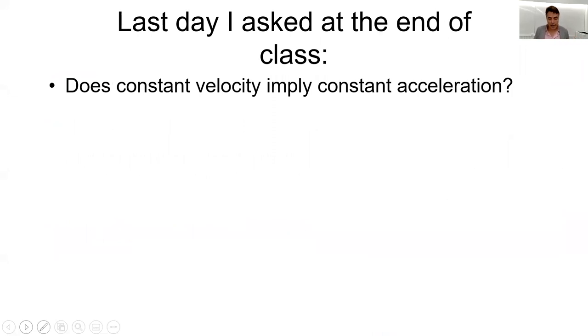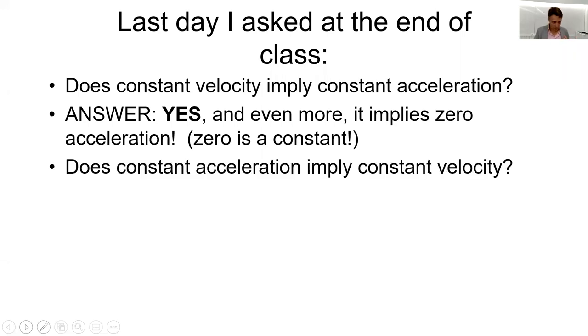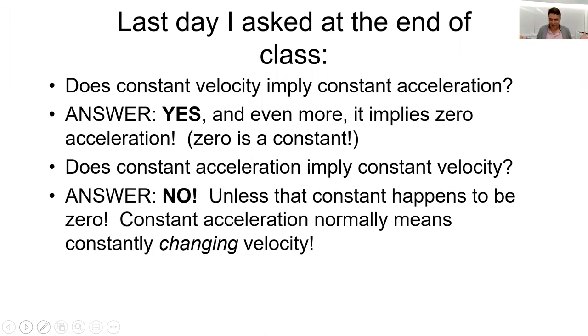Last class on Monday at the end of class, I asked, does constant velocity imply constant acceleration? And the answer to that question is yes. In fact, it also implies that there's zero acceleration. And then the other question is, does constant acceleration imply constant velocity? And the answer is no, unless that constant happens to be zero. So constant acceleration normally means constantly changing velocity. In life, when you see something moving, people use velocity and acceleration to mean almost the same thing. Just if it's big, it's fast. But in physics, that's not the case. Velocity is all about how fast it's going and acceleration is very different. It's this rate of change of velocity.